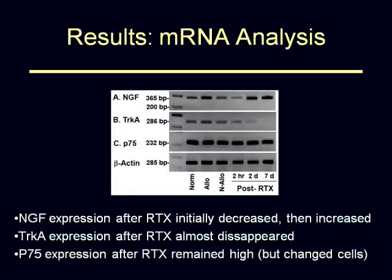This was also confirmed with mRNA analysis. These are normal in the first column, then allodynic, non-allodynic, and then after RTX at two hours, two days, and seven days. NGF initially decreases after RTX injection and then increases again — remember, this increase is in the large cells. TrkA increases in the allodynic animals but then decreases after RTX and pretty much disappears at seven days. P75 remains well expressed throughout.